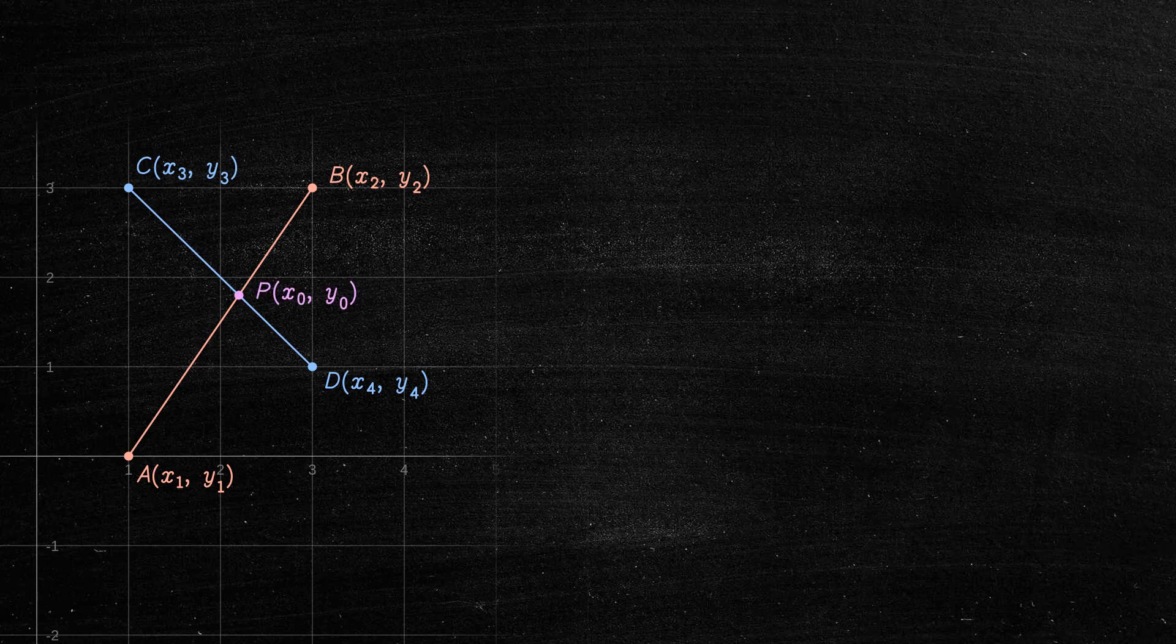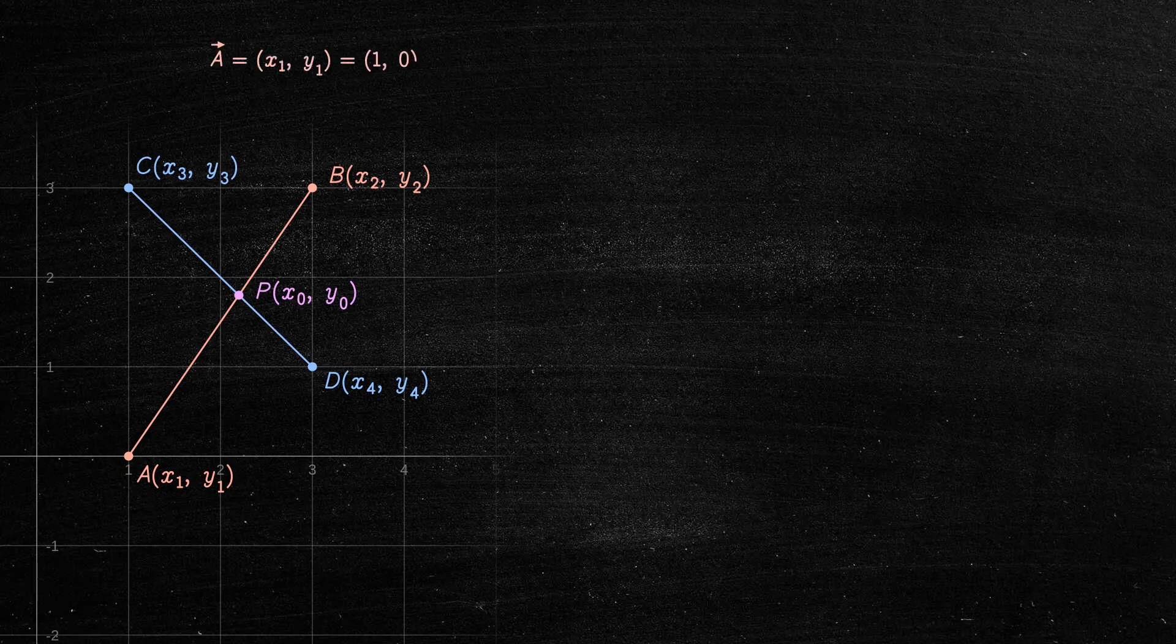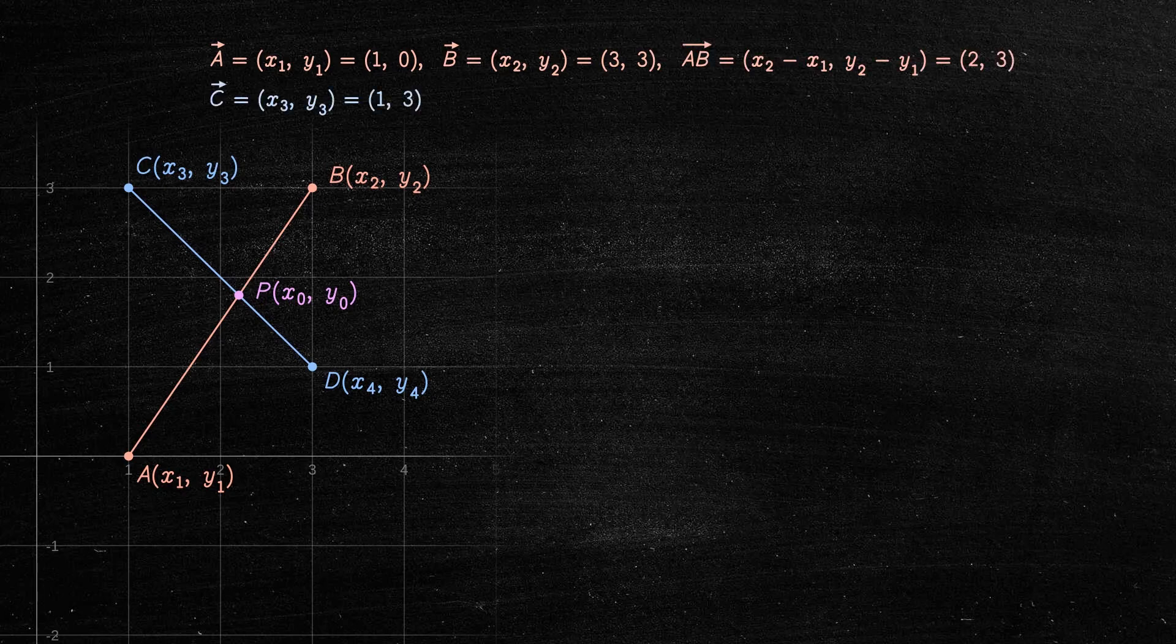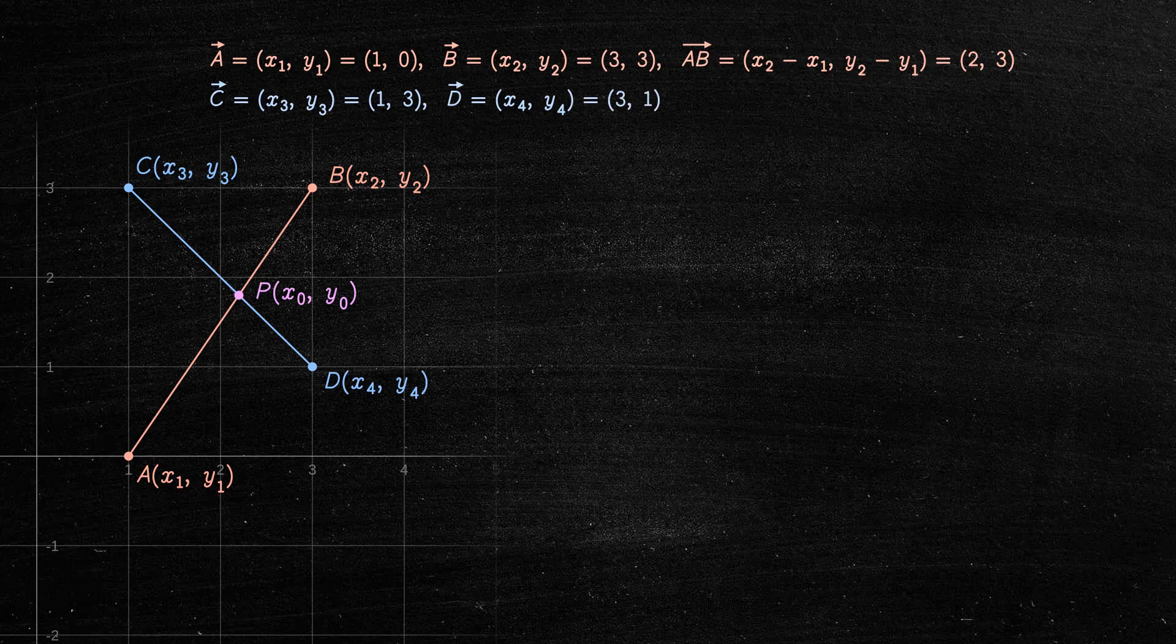Define the following vectors using the points A, B, C, and D: Vector A, Vector B, Vector AB, Vector C, Vector D, and Vector CD.